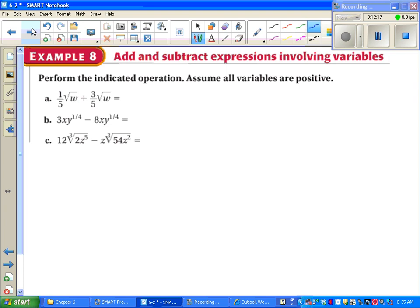Last example. We try to add things together if they have a common radical, which the first one does. 1/5th and 3/5th together make 4/5ths. That should look familiar. Part B also has the same variables with the same exponents. So I'm allowed to just subtract and get negative 5xy to the 1/4th. And part C, as is often the case, is a little harder. 2z to the 5th and 54z squared do not match up. So we're going to have to simplify one or both. And I think we can simplify both of these. For instance, on 2z to the 5th, I see I have 5 z's on the inside. I only need sets of 3. So we can take a z out. Still left with a 2 on the inside and a z squared on the inside.